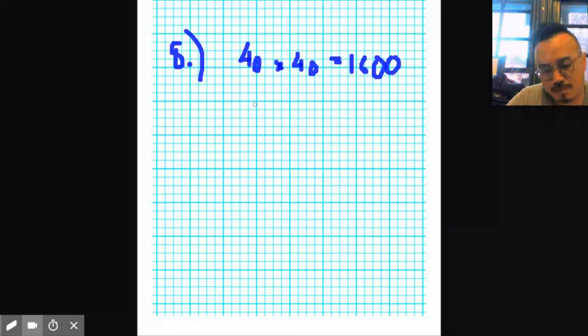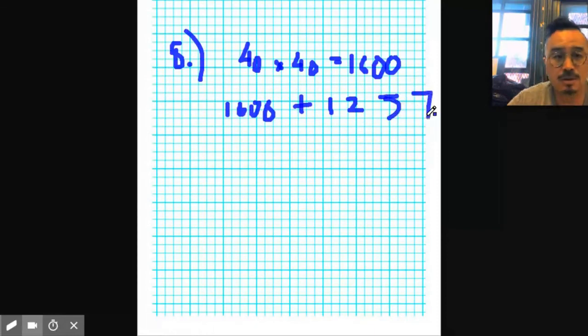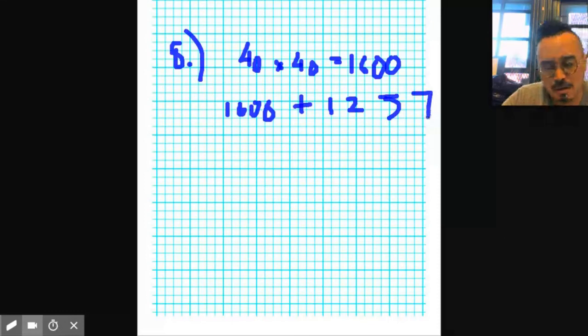So it's 1600 plus 1256.64. So 2856.64, or 2857. All right, fine.